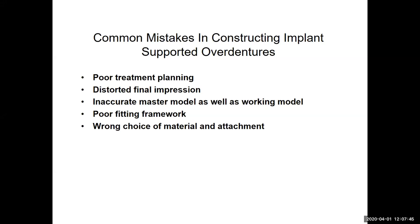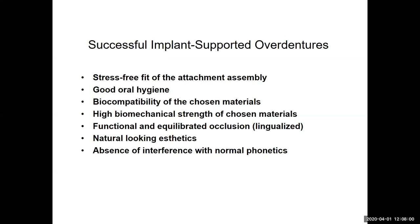Common mistakes in constructing implant-supported overdentures include poor treatment planning, distorted final impressions, inaccurate model work, poor fitting frameworks, and the wrong choice of materials and attachments. For a successful implant-supported overdenture, we want a stress-free fit of the attachment assembly, good oral hygiene, biocompatibility of chosen materials, high biomechanical strength including acrylic with high flexural strength and high impact resistance, functional and equilibrated occlusion — with lingualized occlusion as the choice — natural-looking aesthetics, and absence of interference with normal phonetics.